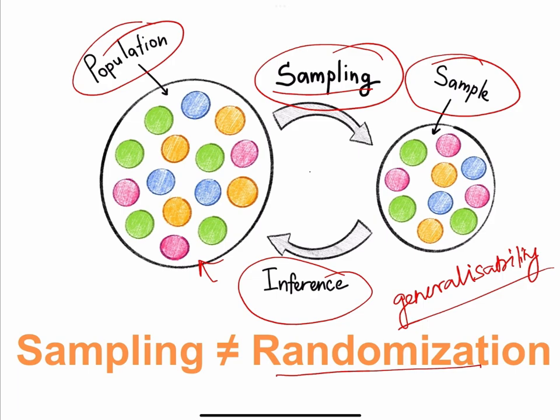At this point I want to make clear that sampling is not equal to randomization. Sampling is the procedure or technique by which we take the sample from the population. Randomization, on the other hand, is used in intervention or experimental studies when we are dividing the study sample into two groups — say A and B — receiving two different interventions. Randomization is the process by which study participants are divided into study and control groups. This happens only in interventional or experimental studies, and you should not confuse sampling with randomization.